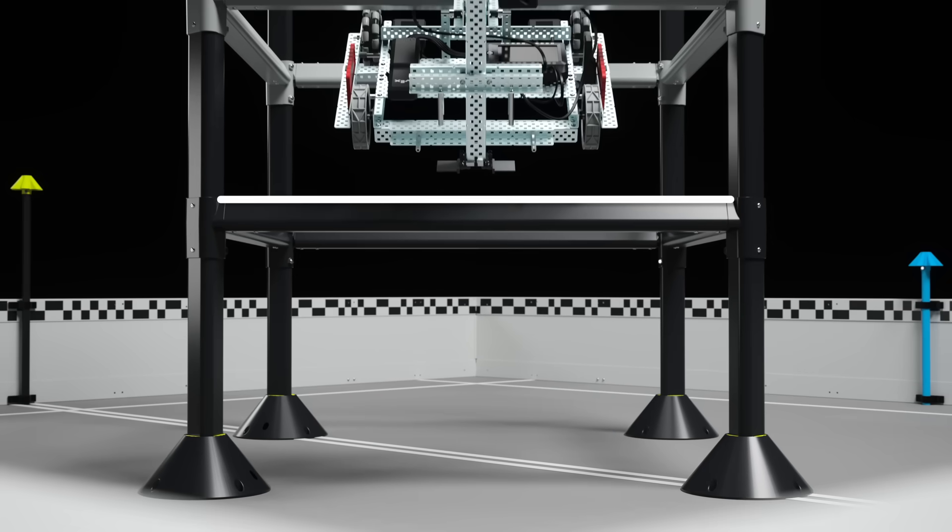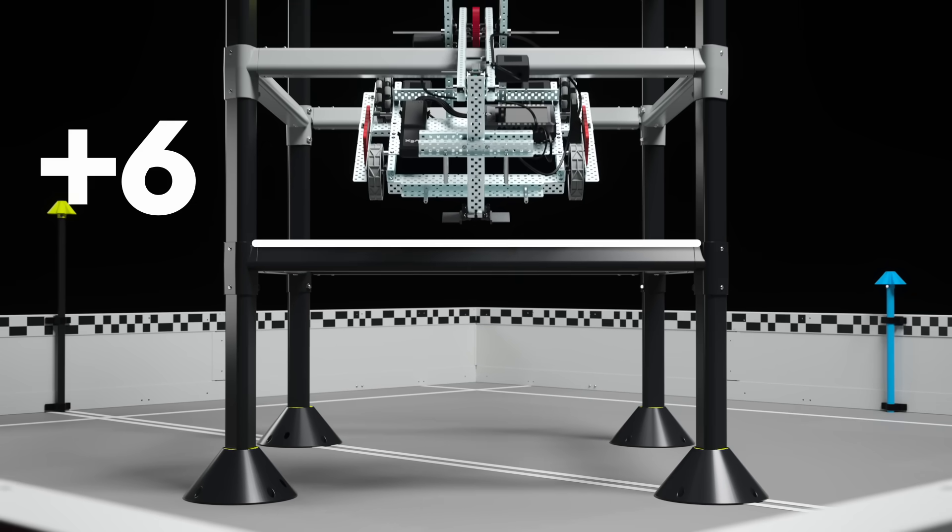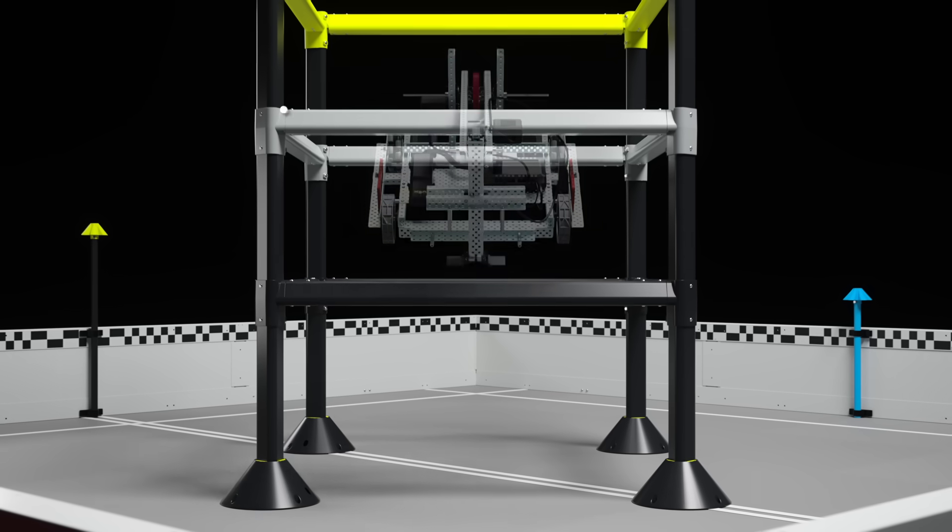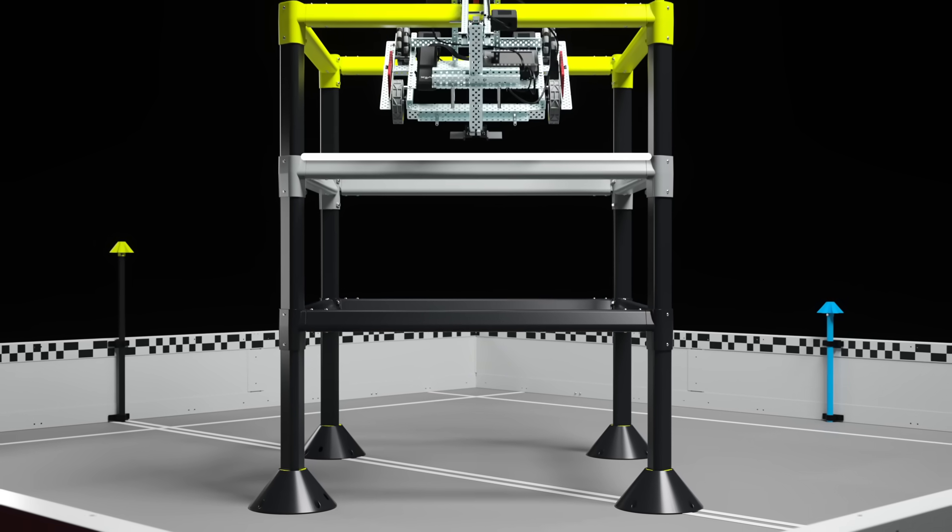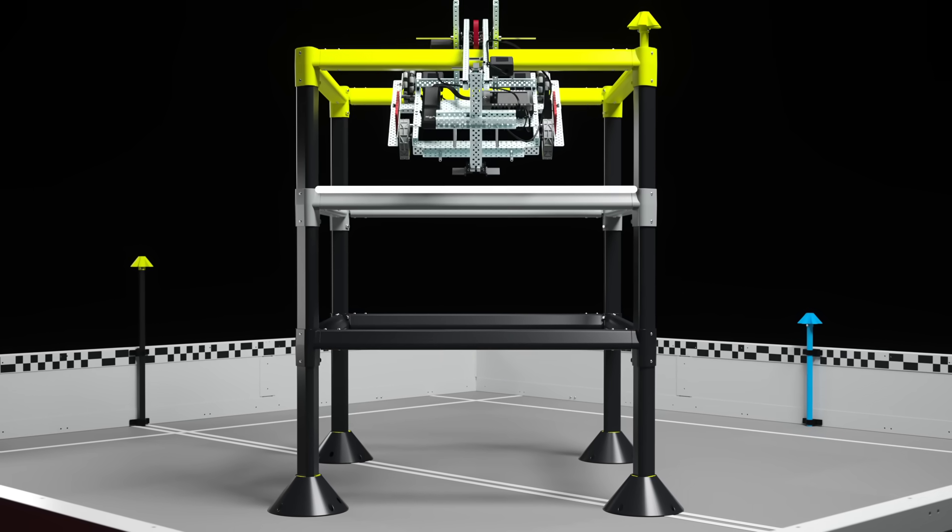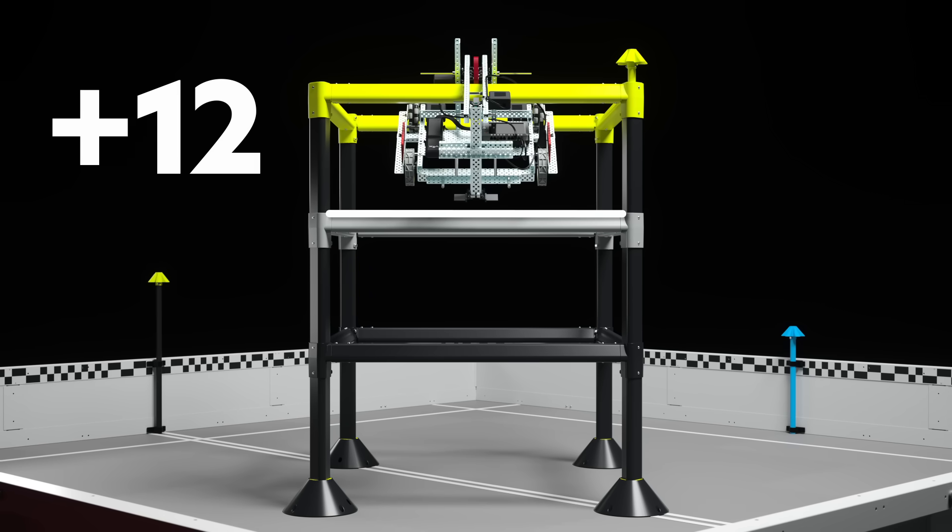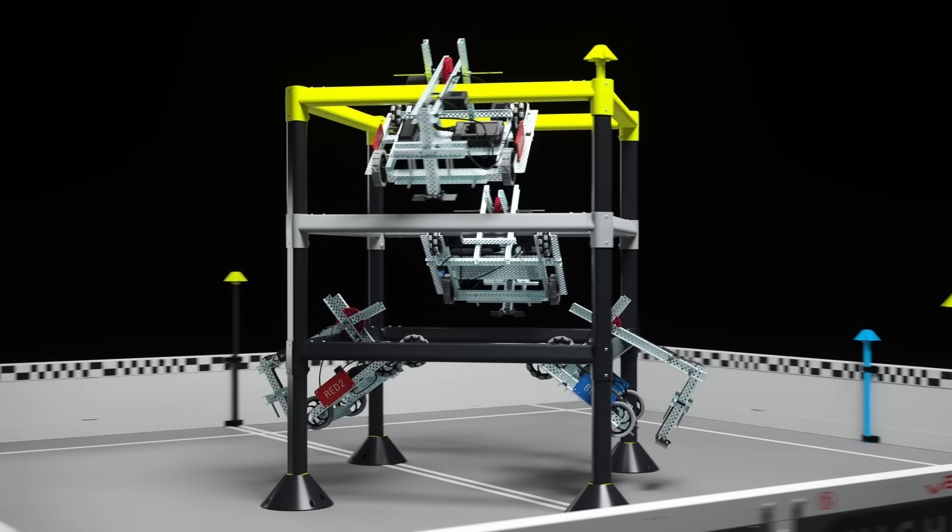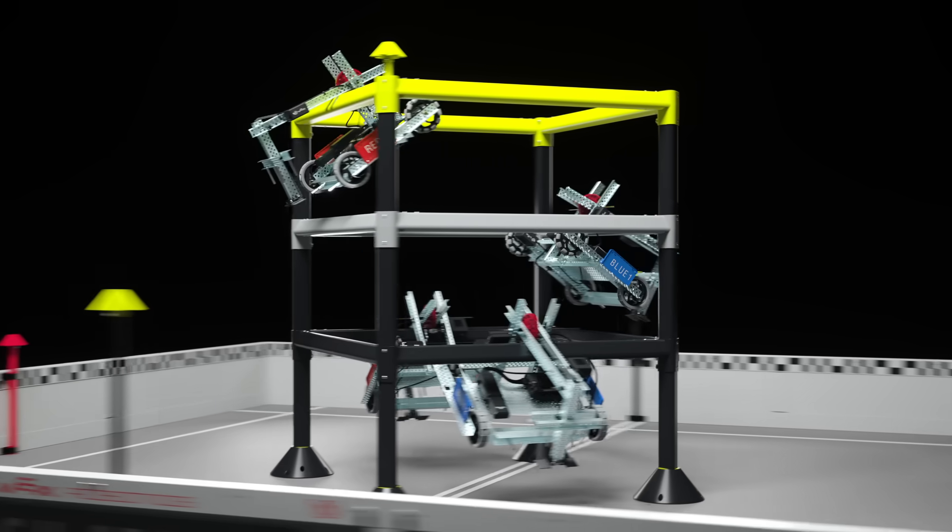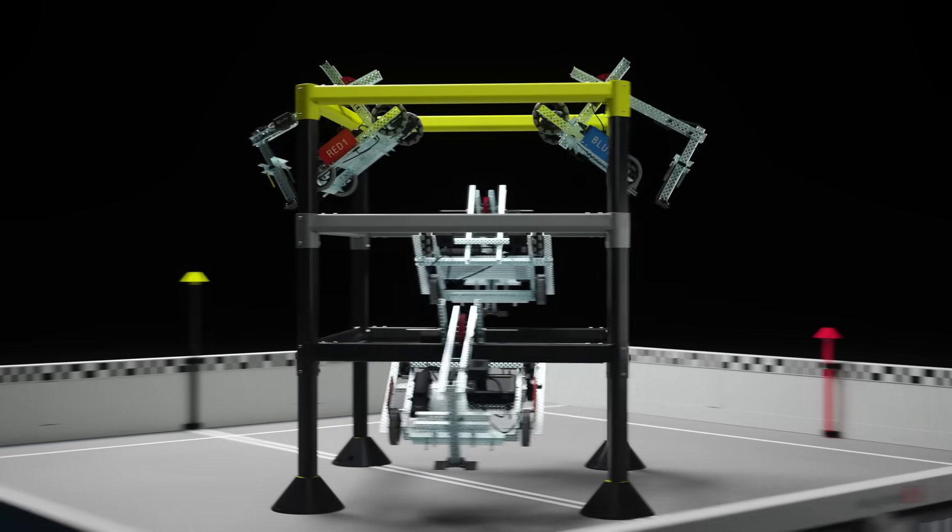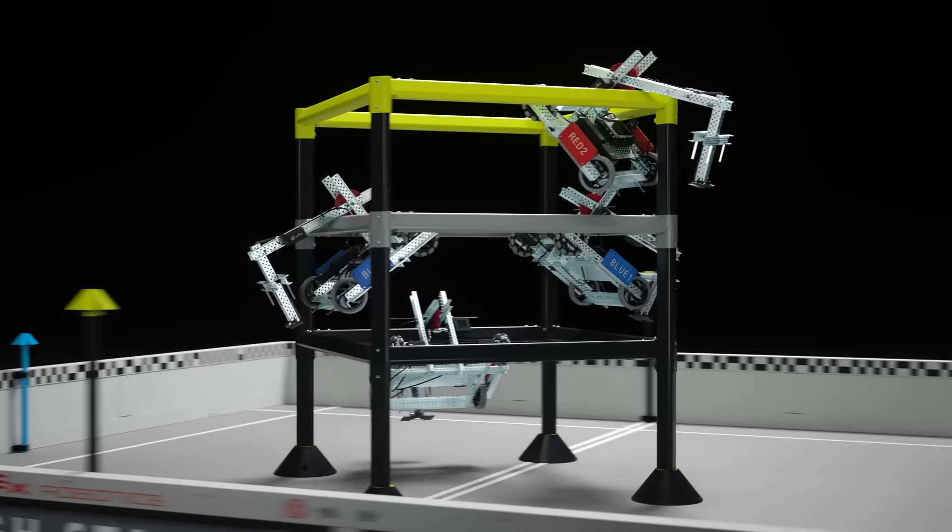Passing the first bar gets you to a level two climb and is worth six points. Getting the entire robot above the second bar is considered a level three climb and is worth 12 points. Note that the ladder has four sides, but there are no alliance-specific climbing locations. Robots may climb up any side that they want.